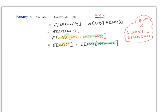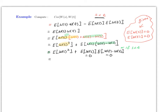Notice that Ws and (Wt − Ws) are independent when s < t, by independent increments. So E[Ws · (Wt − Ws)] = E[Ws]·E[Wt − Ws] = 0·0 = 0. Therefore the result is just E[Ws²] = Var(Ws) = s.